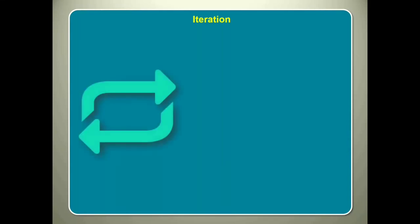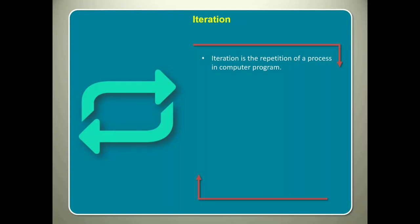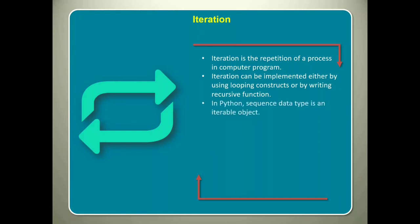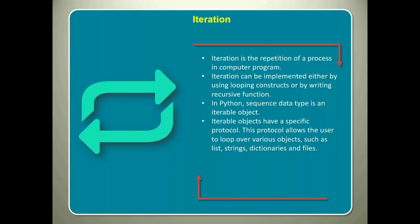Next, let us move ahead on to the next concept: iteration. Iteration, as you know, is the repetition of a process in computer program. You can implement iteration either by using looping constructs or by writing recursive function. In Python, sequence data type is an iterable object. Iterable objects have a specific protocol. This protocol allows you to loop over various objects such as list, strings, dictionaries and files. Using this protocol, you can process each element of container even if you do not know internal structure of the container.